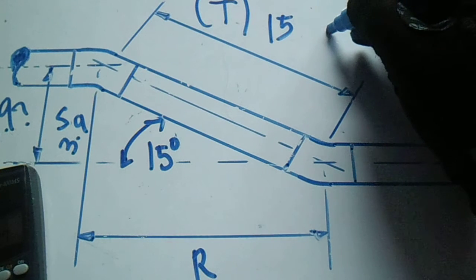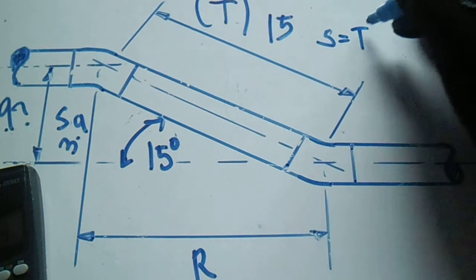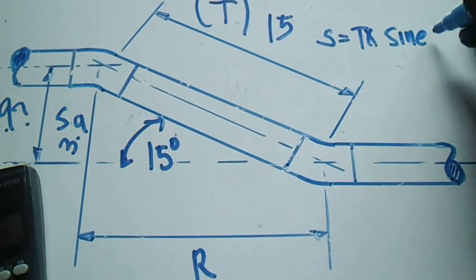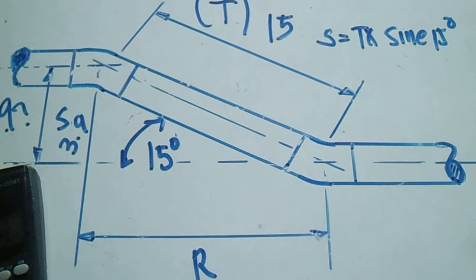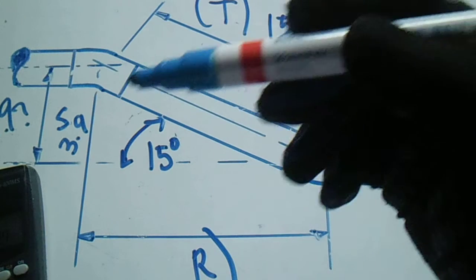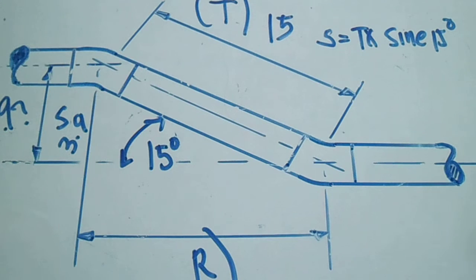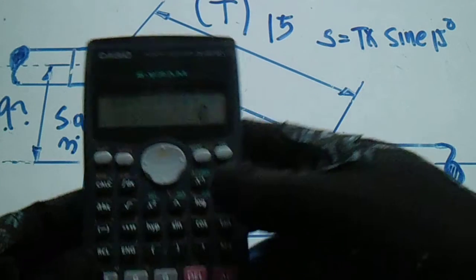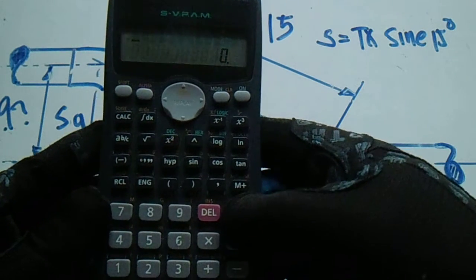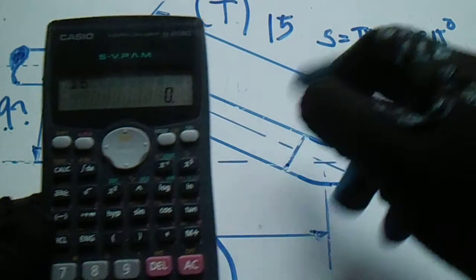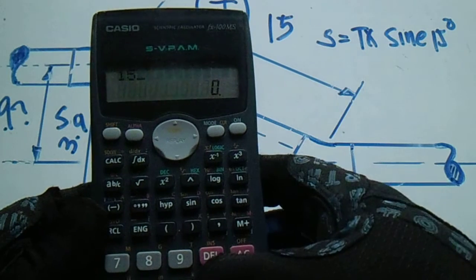So this is the formula to get that set equals travel multiply it to sine 15 degrees. Now we will compute now this run, same formula, same procedure. So 15, we have a given of travel, 15 multiply it to...